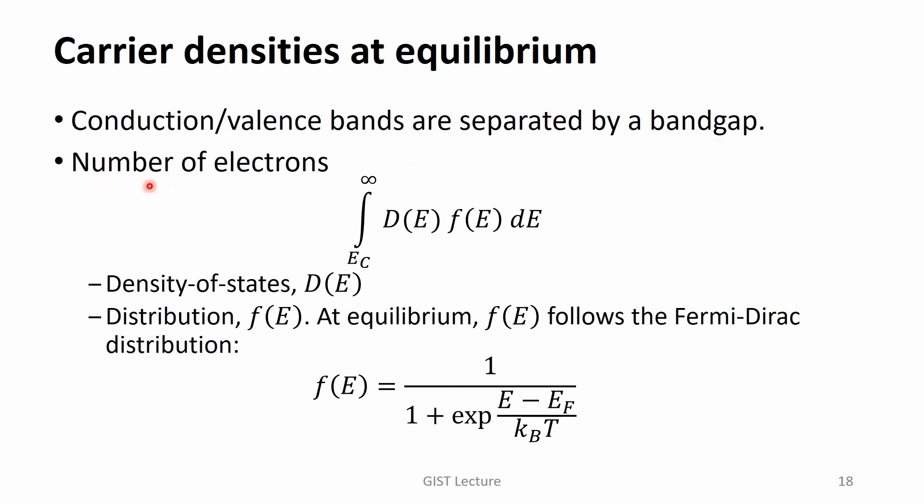In order to answer this question, we have to know two quantities, the density of states and electron distribution. The density of states means the number of available states at a given energy. It can be directly obtained from the band structure. We treat it as a given function. On the other hand, the distribution function, the probability to fill an available state changes with the applied voltages.